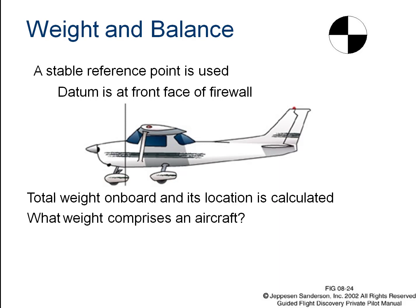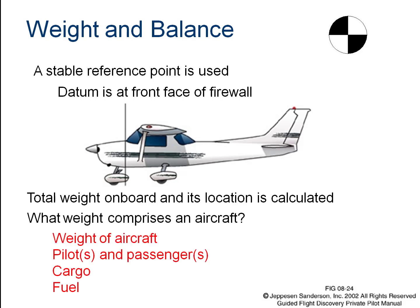The weight making up an airplane is straightforward: the weight of the airplane itself, the weight of pilots and passengers, the weight of cargo, and the weight of fuel. Frequently, fuel is the biggest weight component — it's about seven pounds per gallon, so it's quite heavy.